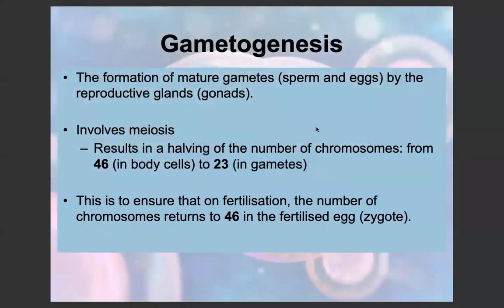In terms of gametogenesis, this is the formation of mature gametes by the reproductive glands — so by the gonads. This occurs in different stages at different times of life for males and females. Gametogenesis involves meiosis, which is reduction division, so it halves the number of chromosomes. In humans, it halves from 46 in somatic cells to 23 in sex cells. This ensures that fertilization allows the zygote to have 46 chromosomes — a diploid number — because each gamete has 23.